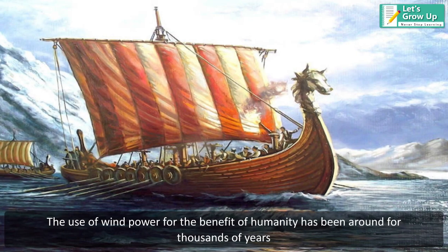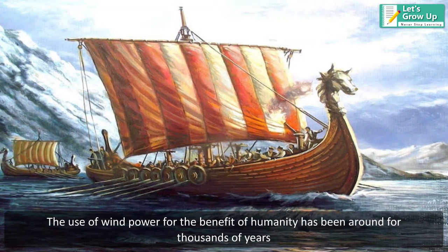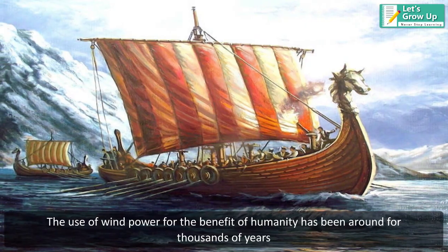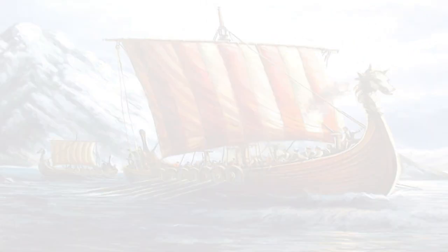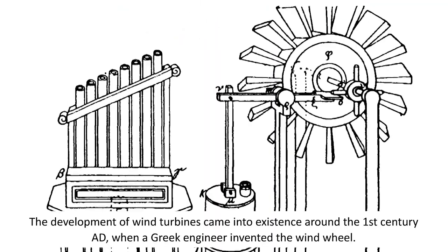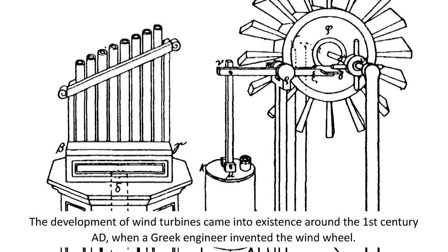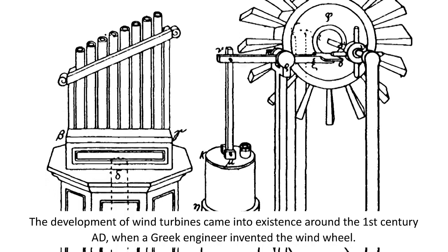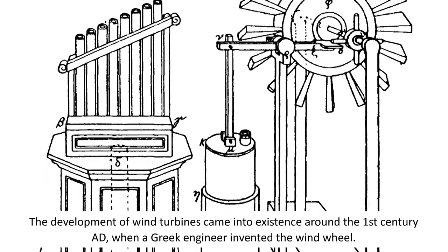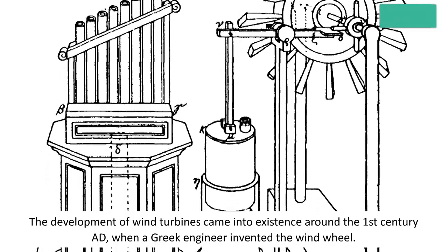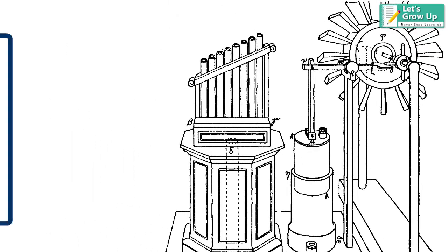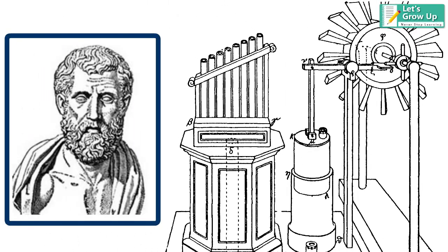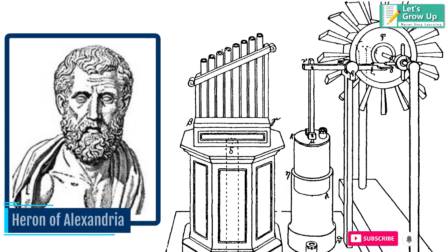The use of wind power for the benefit of humanity has been around for thousands of years. The development of wind turbines came into existence around the first century AD, when a Greek engineer invented the wind wheel. This model was developed by the Greek inventor Heron of Alexandria.